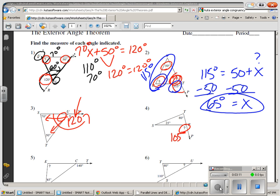And what remains is 65. So if this is 65, does it also make sense that the 65 and the 115 make your straight angle of 180 degrees? And it does.